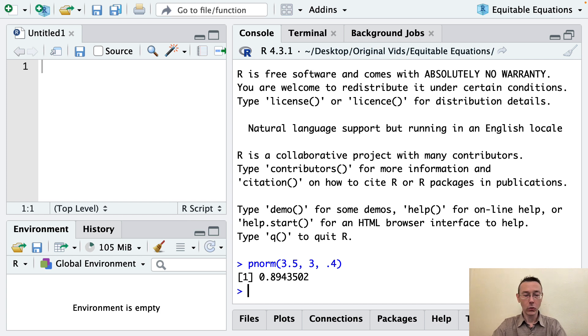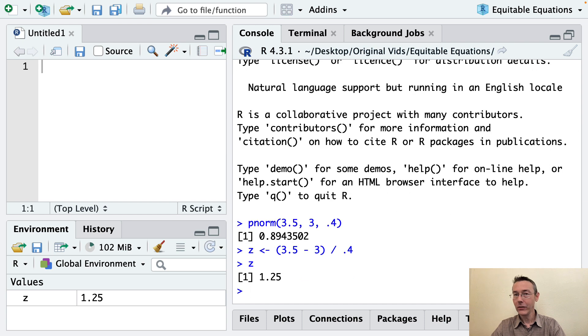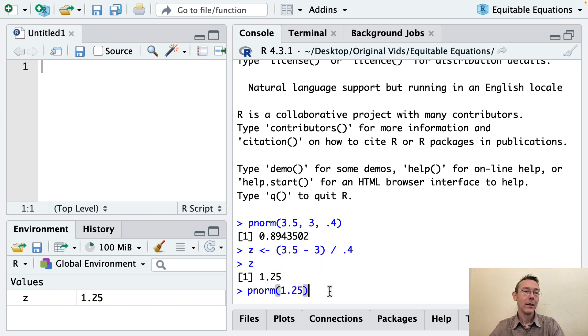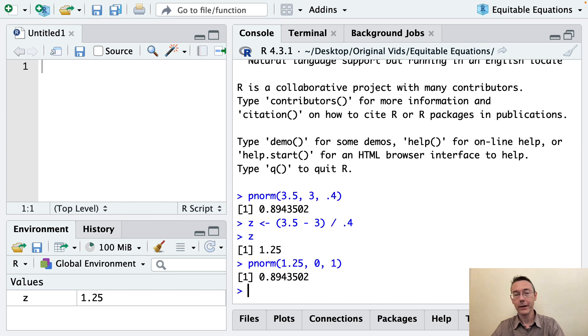The second way I want to do it is with a Z score. So I'm going to take this value that I have, 3.5, and convert it to a Z score. And the way you do that is you take the value 3.5 and you subtract off the mean 3 and you divide it by the standard deviation 0.4. So in this case the Z score is 1.25. And the way that normal probabilities work is that this pnorm in this distribution, this normal distribution with mean 3 and standard deviation 0.4, is going to be exactly the same as the pnorm of the corresponding Z score in a standard normal distribution. That is with mean 0 and standard deviation 1. You get the same value.